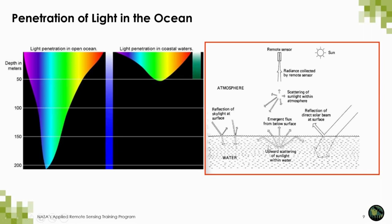Some of the light is reflected by the sea surface, and the transmitted portion interacts with water constituents. Visible light leaves the water surface and is detected by the sensor only after being absorbed or scattered even more by the atmosphere. This illustrates the big component of the atmosphere in the signal actually received by a satellite.